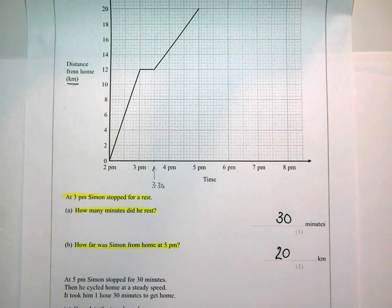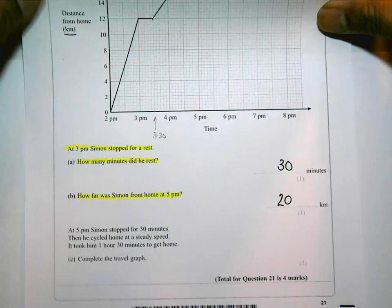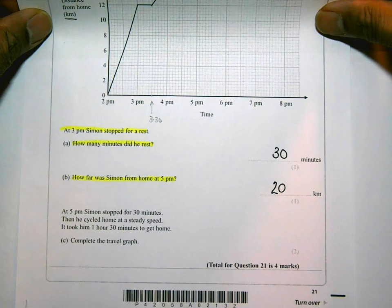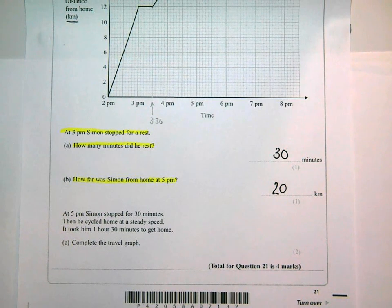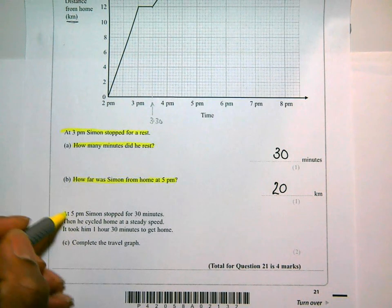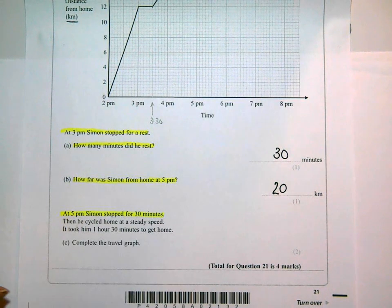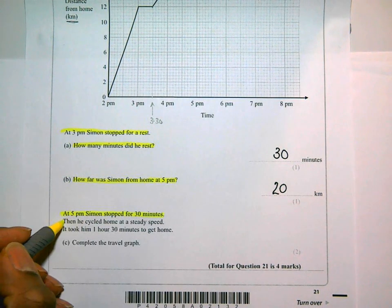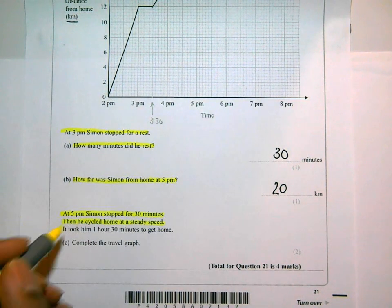Let's look at the last part, part C. We're going to have to move this up and down for the next bit of the question. But let's see what they're asking us to do in part C. At 5 p.m. Simon stopped for 30 minutes. So he stopped for 30 minutes. He then cycled home at a steady speed. It took him an hour and 30 minutes to get home.